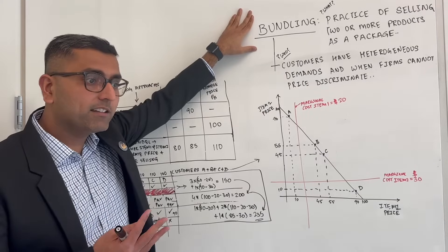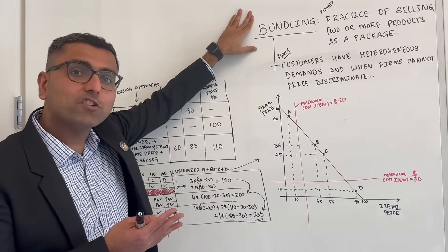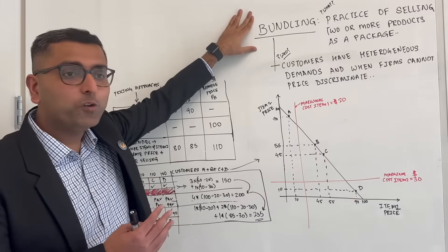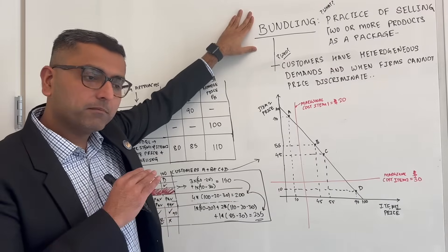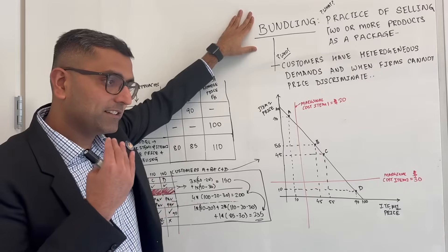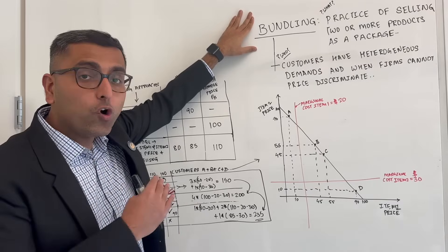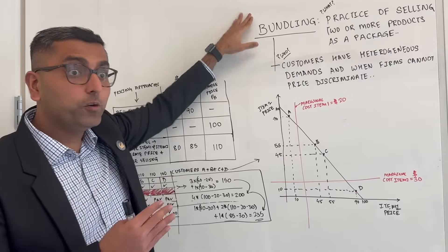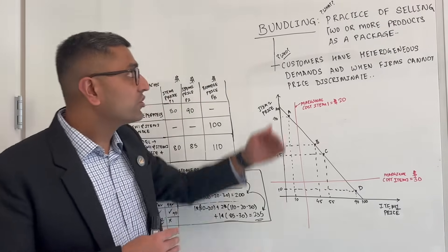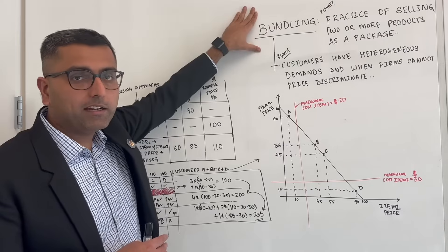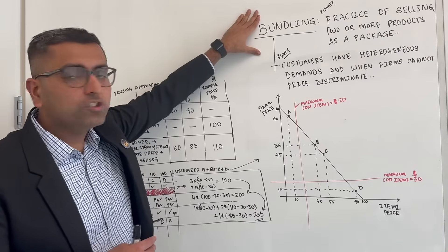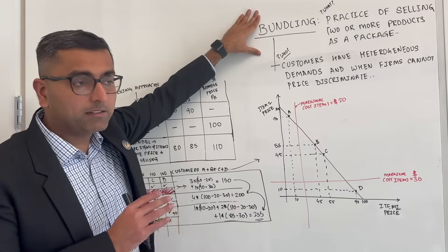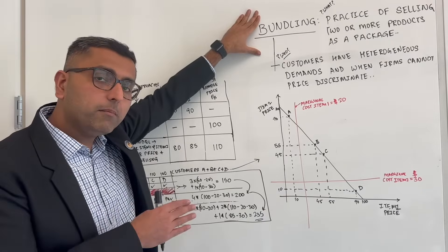We see bundling in so many situations. When you buy a car, they can sell you a standard package which has standard options, or you can buy without a package — individually — or you can buy a premium package. That's bundling. Bundling is used when customers have heterogeneous demand, meaning they value one thing more than the other.